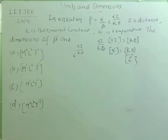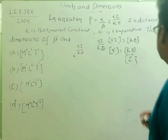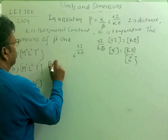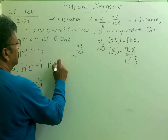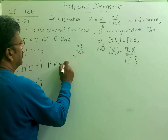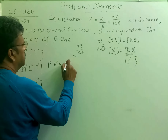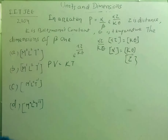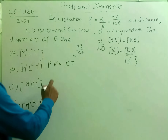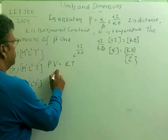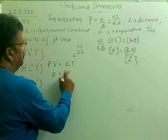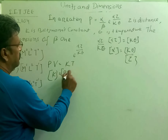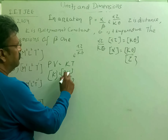What is k? k is Boltzmann's constant. We can find the dimensional formula for Boltzmann's constant from the relationship PV equals kT — the ideal gas law. From this, k equals PV divided by T, so the dimensions of k are the dimensions of PV divided by dimensions of T.